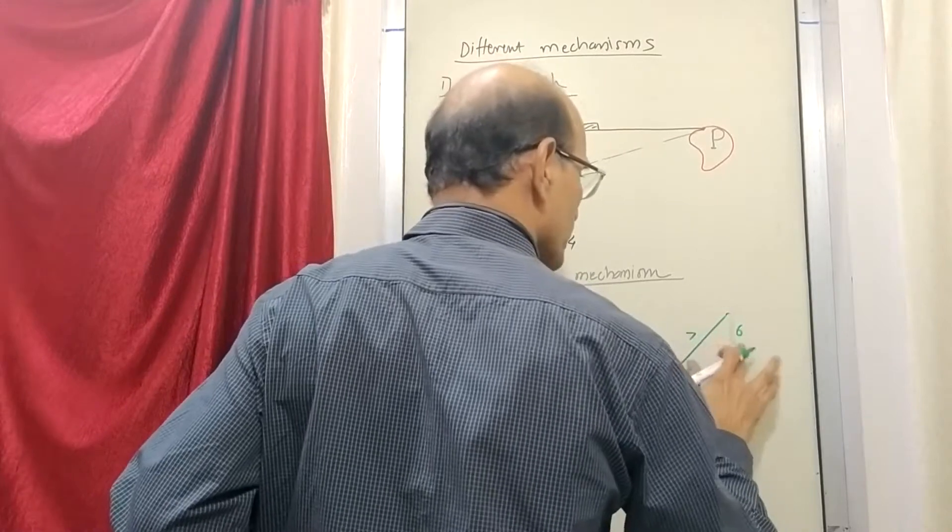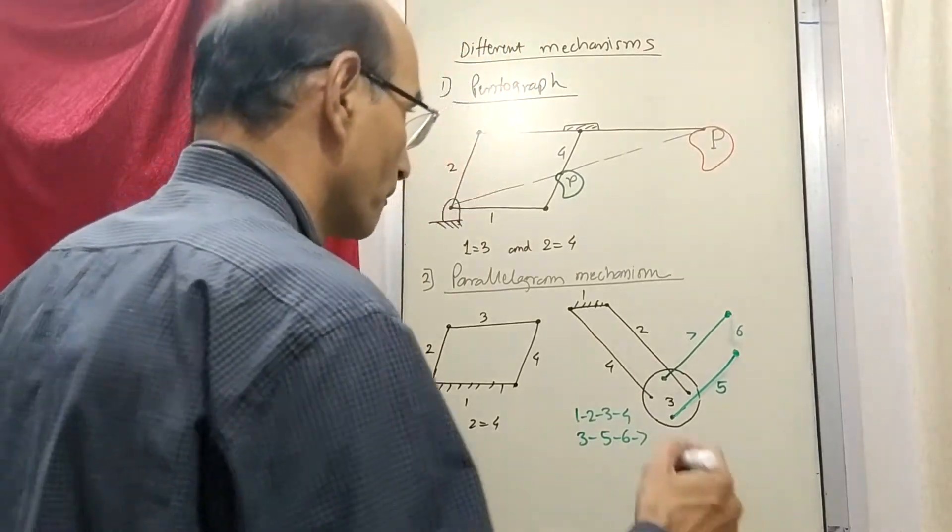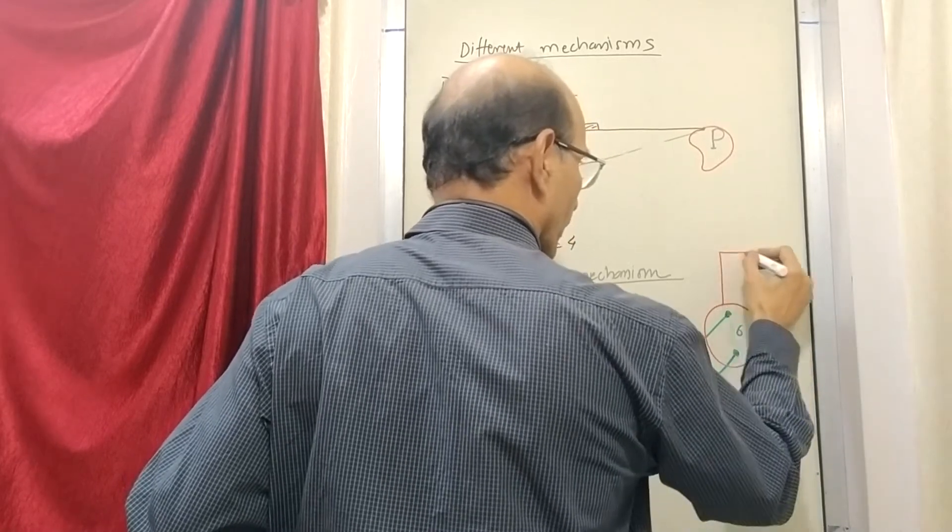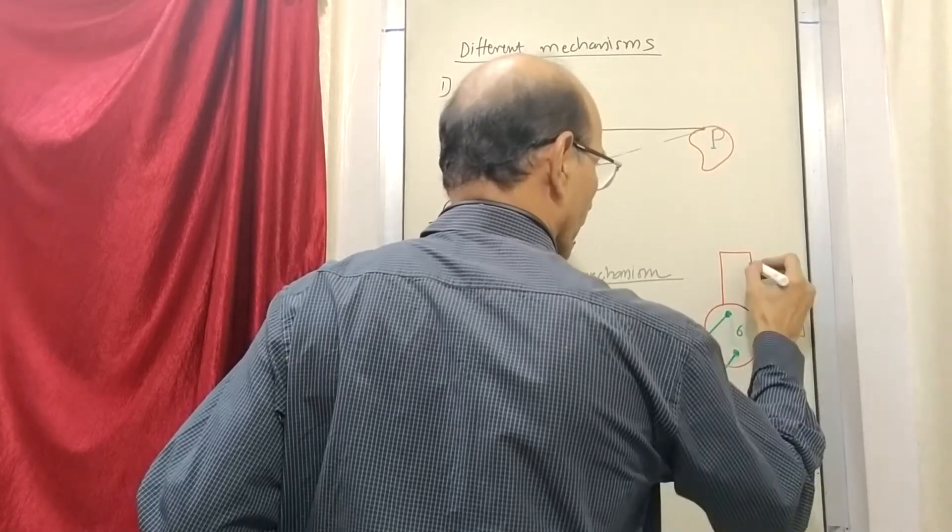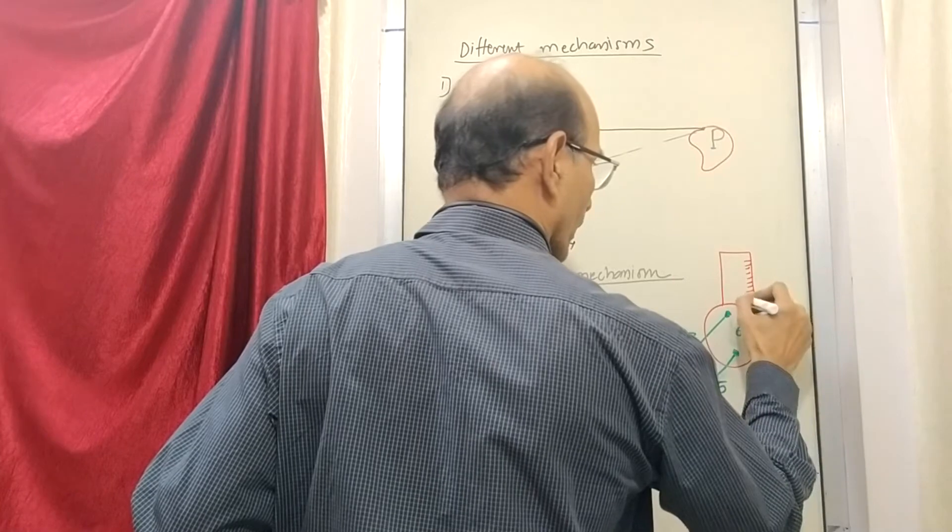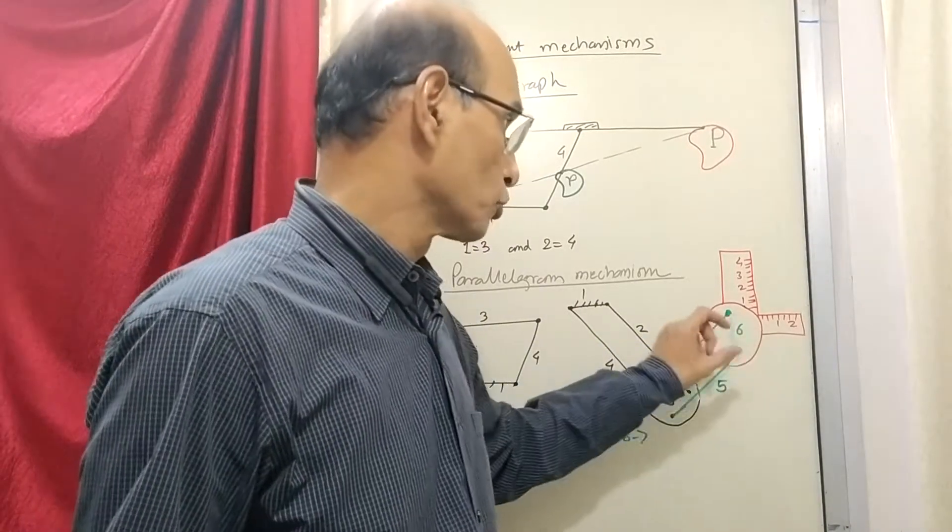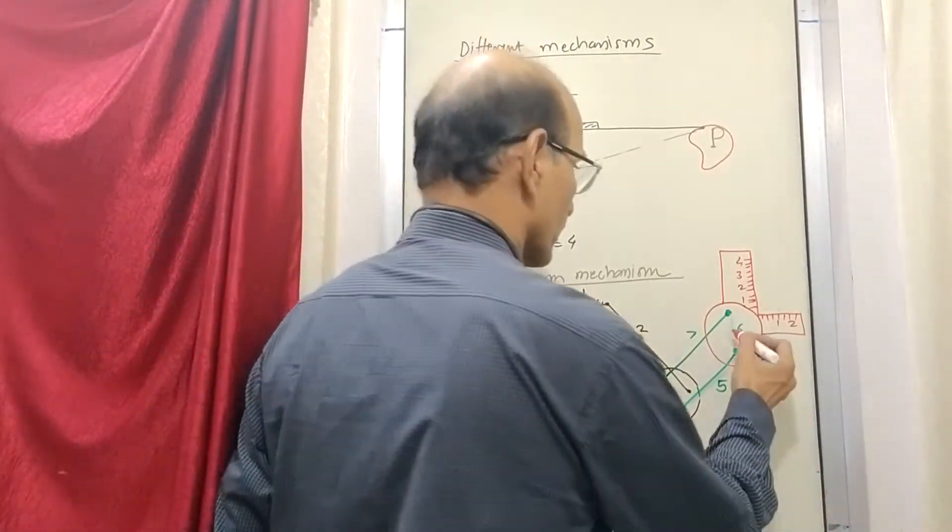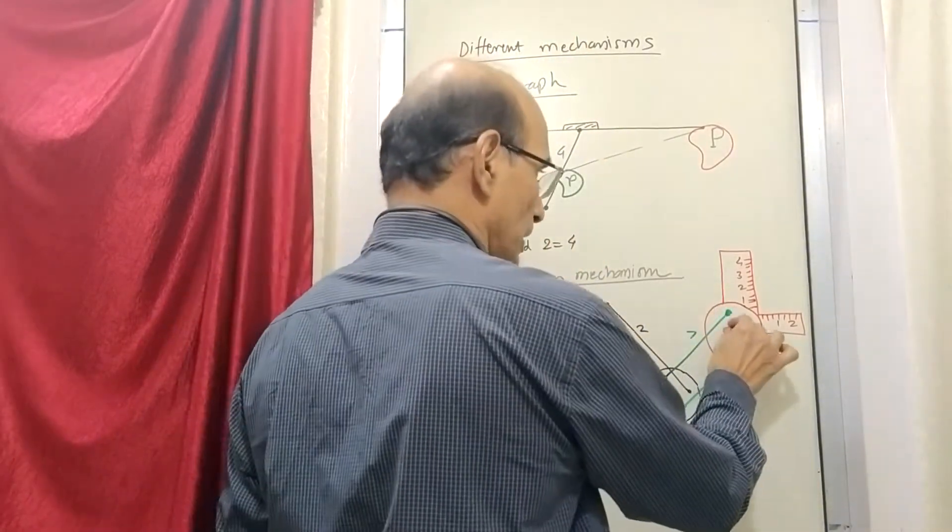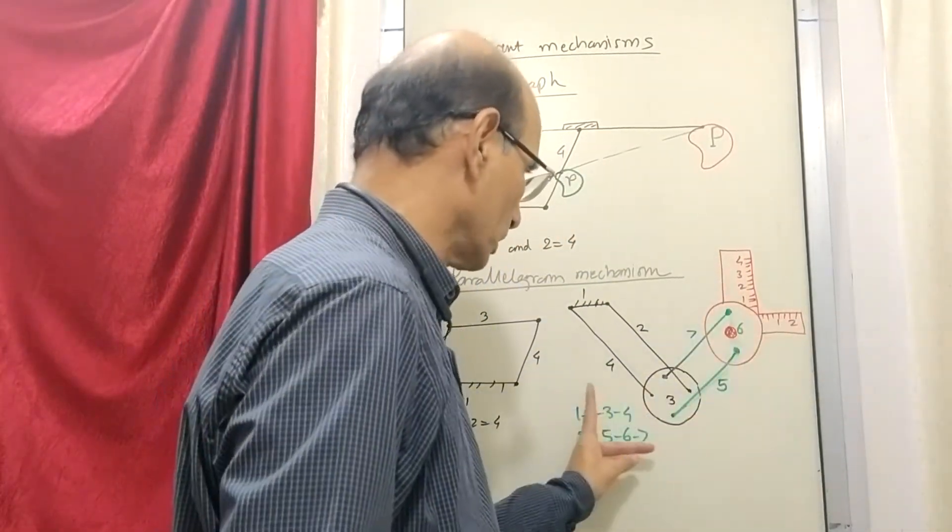So now what they do is this link number six is modified to form a scale. So now this scale has one knob here. You have to hold this knob and move this anywhere on the paper. You will find that this scale moves anywhere on the paper like this.